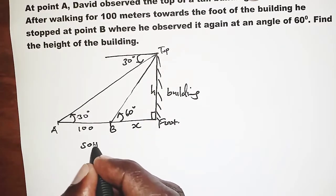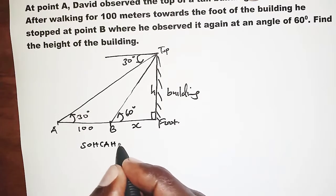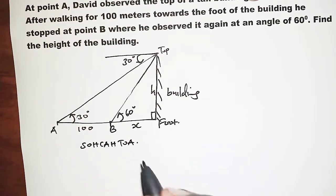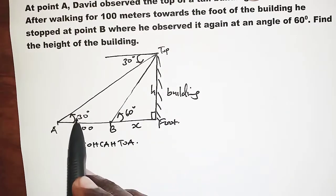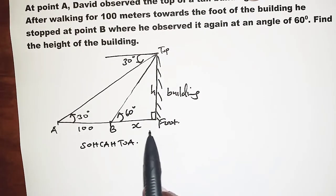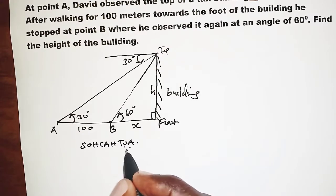So again, we'll apply SOHCAHTOA, where the height of the building is opposite to the angle and then the ground is adjacent. So we go to tangent.